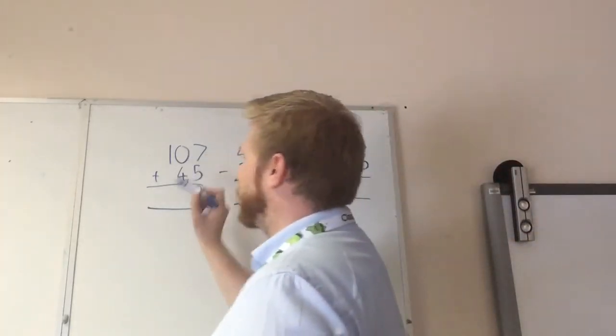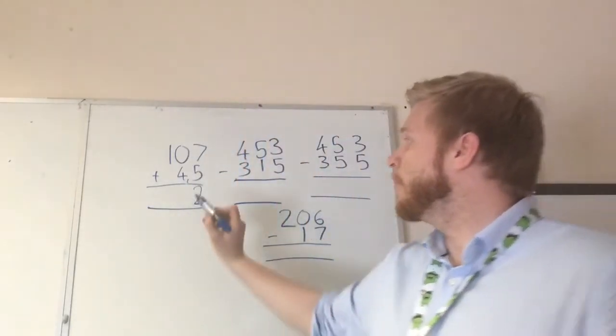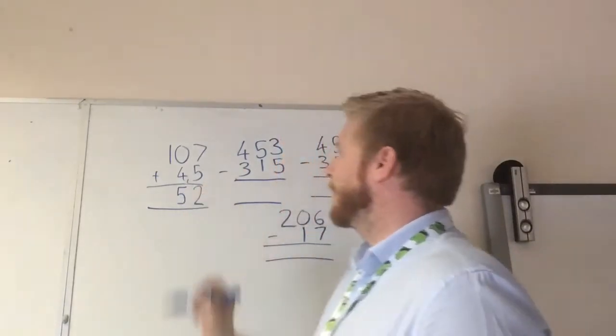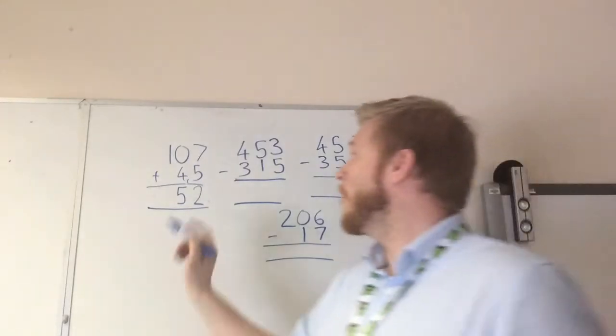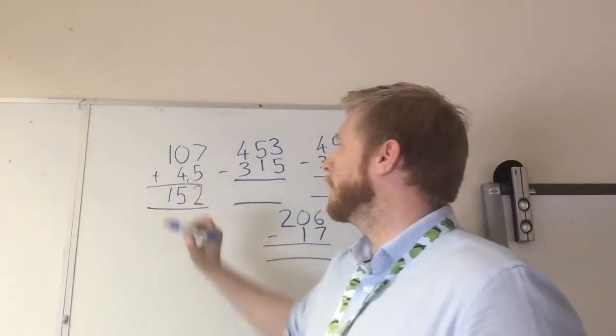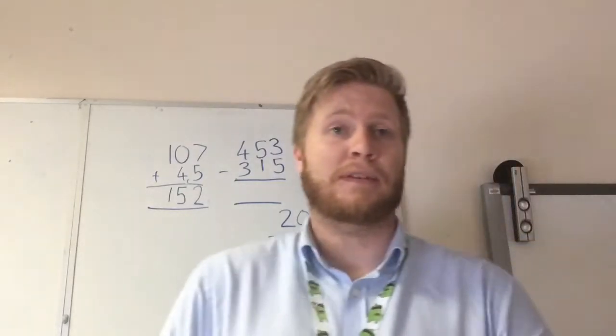Okay, then we have 0 plus 4, which is 4. But remember we've got our little one on the doorstep, so we add that as well to make it 5. And our last one, we have 1 plus 0, which is 1. So we've got our answer of 152.